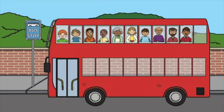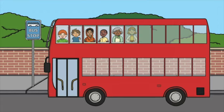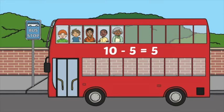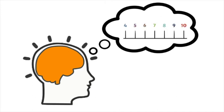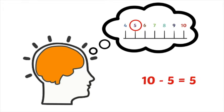First there were ten passengers on the bus. Then five passengers hopped off. Now how many passengers are there? Five. Ten take away five equals five. Imagine the number line starting at ten and count back five: one, two, three, four, five. The answer is five. Ten take away five equals five.